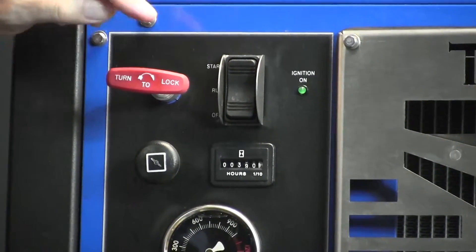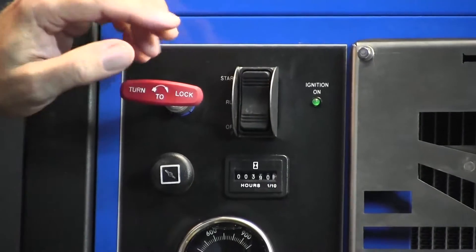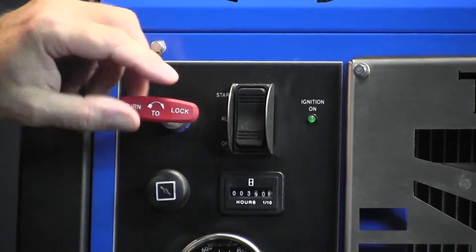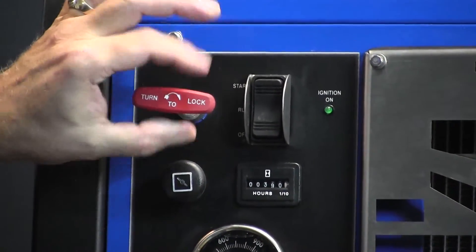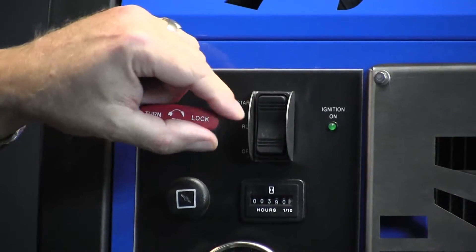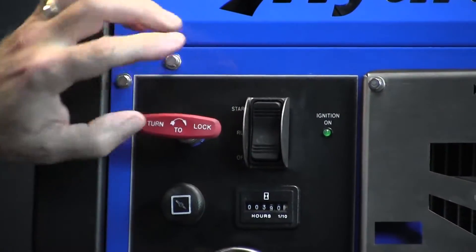One thing to note about this throttle control: during operation of the 575, we want it at full throttle at all times. Don't try to back the pressure down or adjust controls by slowing the engine down. It's not doing the engine any good to have it running at partial throttle.